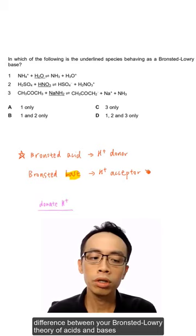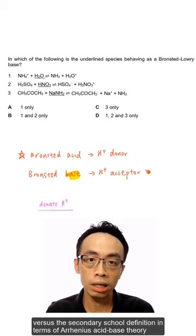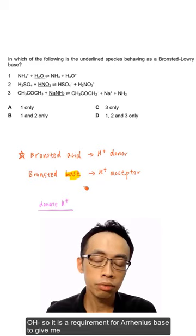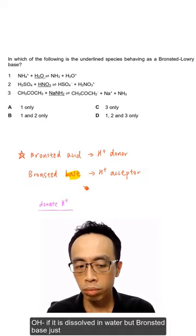Now the biggest difference between your Bronsted-Lowry theory of acids and bases versus the secondary school definition in terms of Arrhenius acid-base theory, the biggest difference is in terms of my Bronsted Base because for an Arrhenius base, it will dissociate in solution to give me OH-. So it is a requirement for my Arrhenius base to give me OH- if it is dissolved in water, but Bronsted Base just require the species to accept a H-plus.